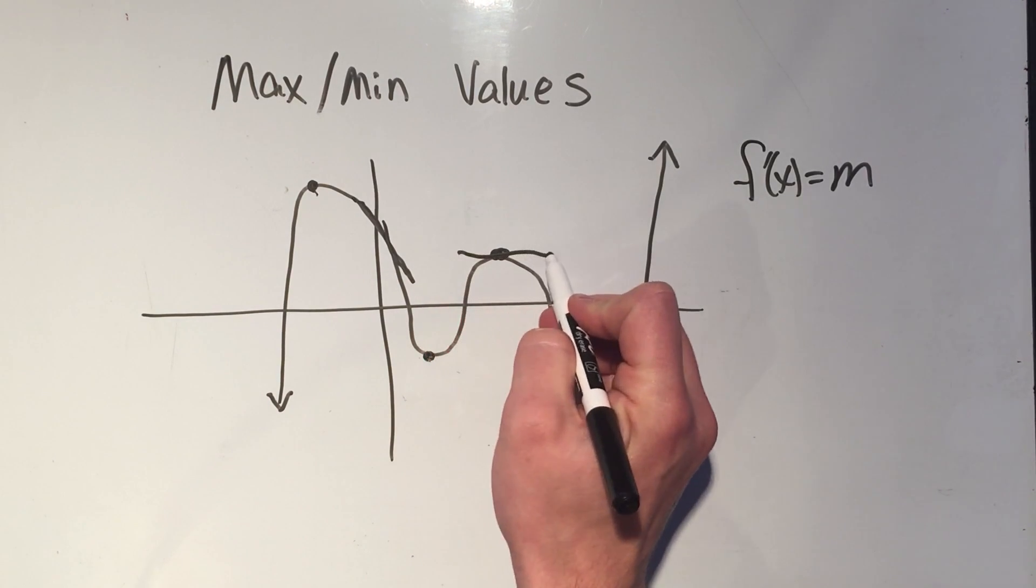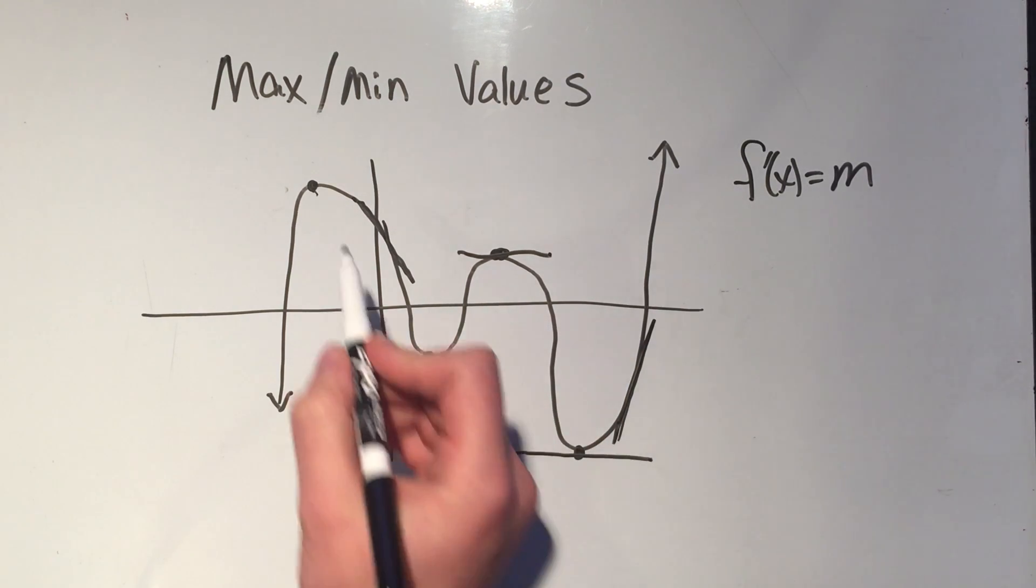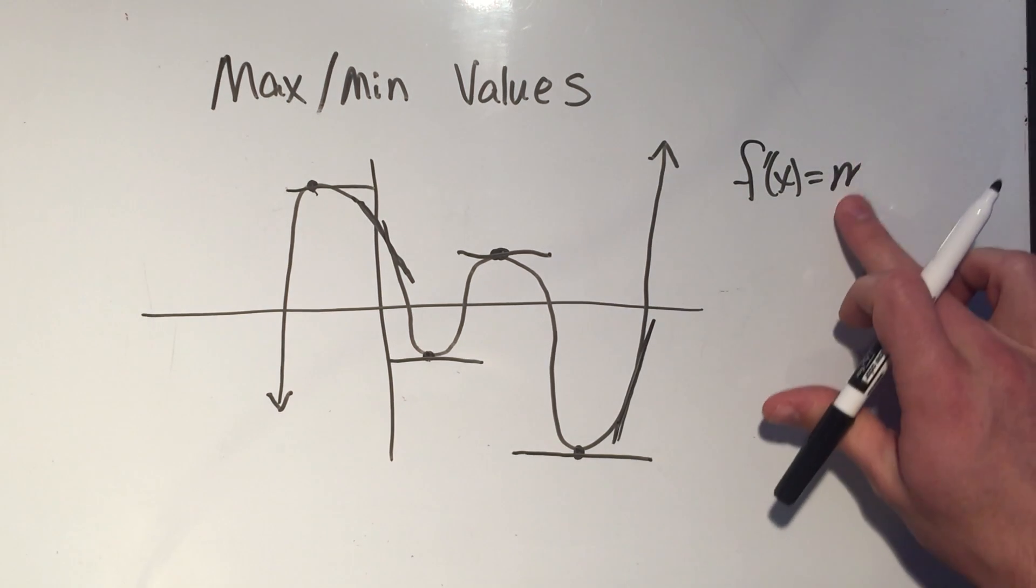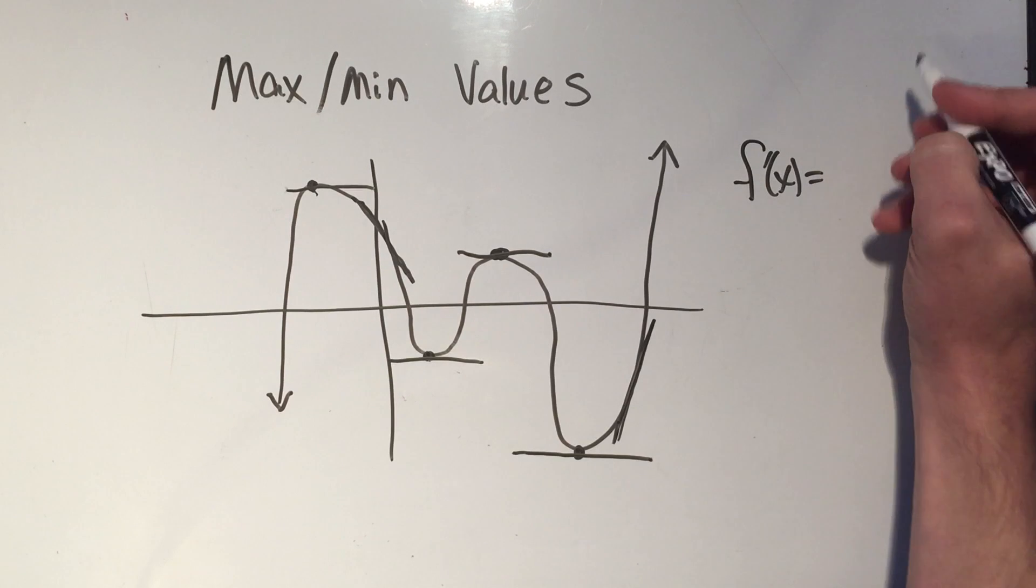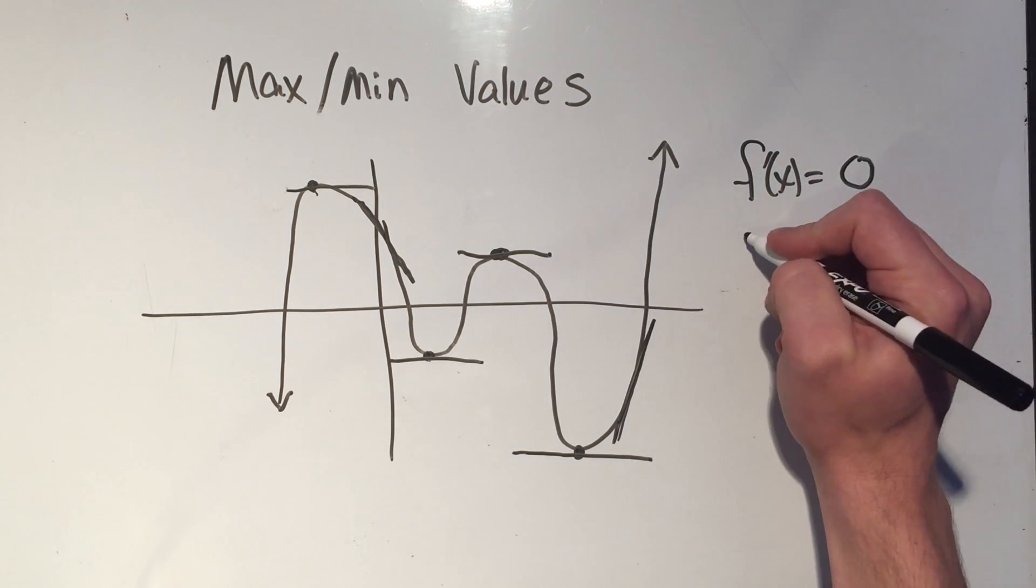You see, since at the maximum or the minimum, the function's turning around, the tangent lines are level. They're horizontal. And what slope does a horizontal line have? Well, it has no slope. It has zero slope. So that's how you will find the x values that give you maximum or minimum. We'll take the derivative and we'll set them equal to zero. And those are called critical points.